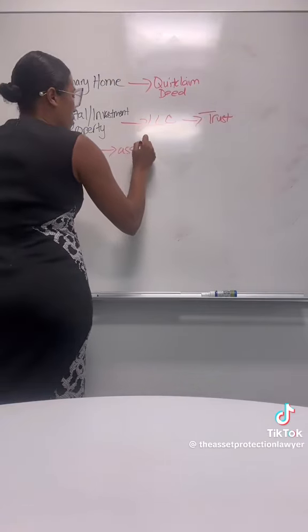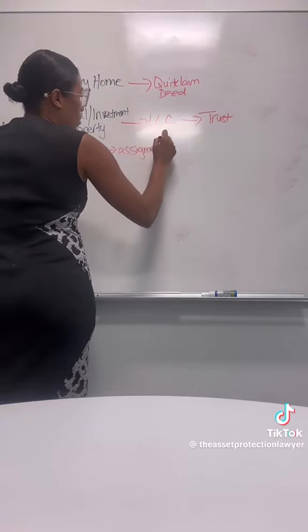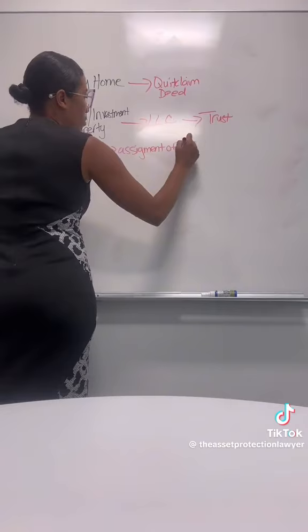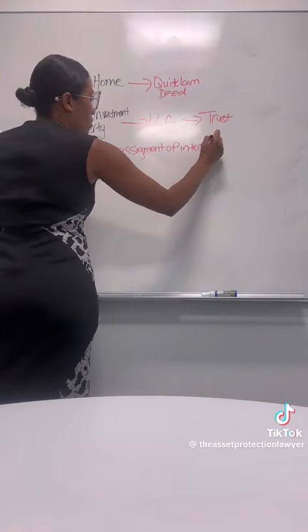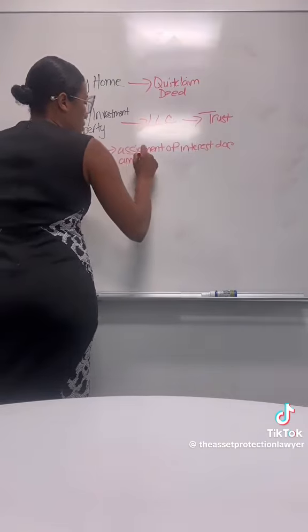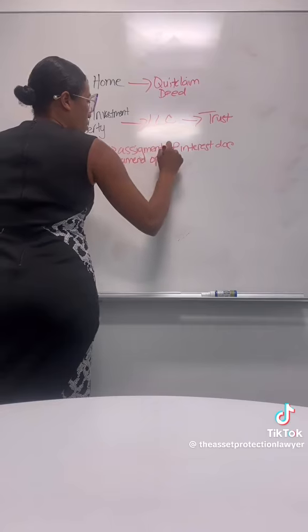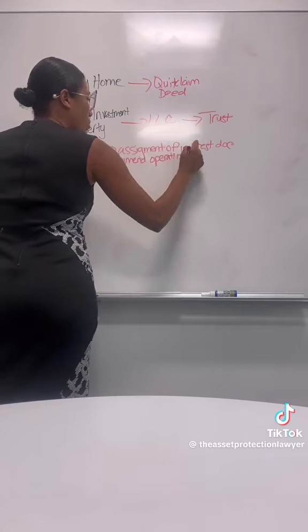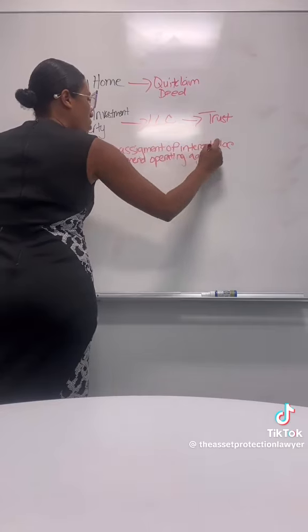If you have a business like an LLC, the same theory applies. You can assign the membership interest to the trust using an assignment of transfer document, and also don't forget to amend your operating agreement.